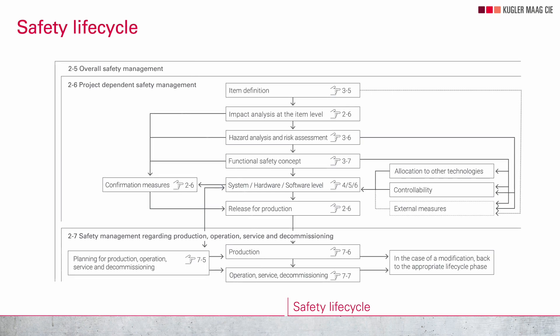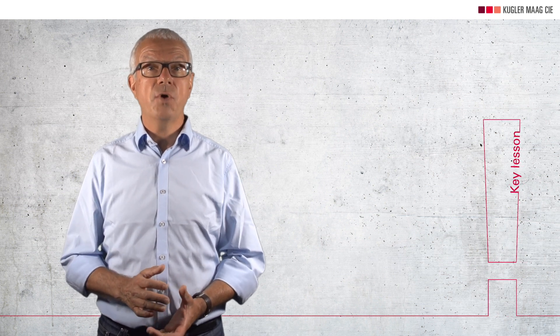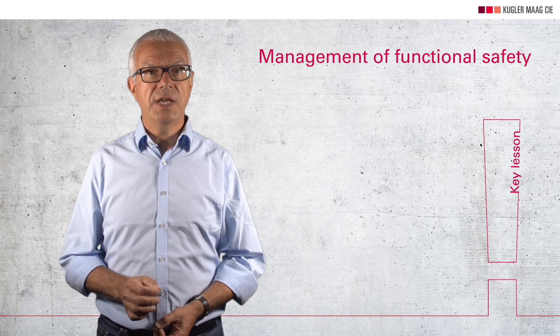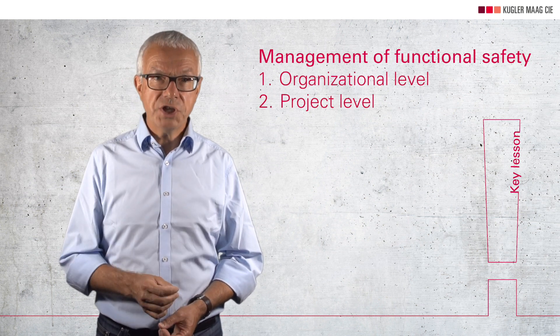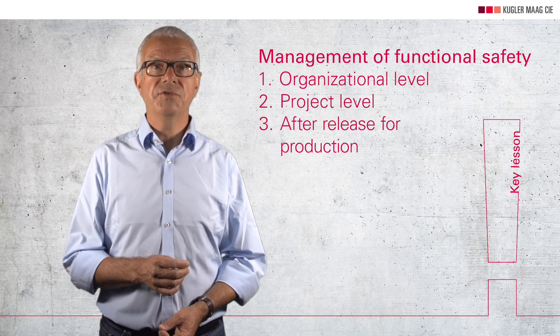Let's start with point number one. For functional safety in automotive, a so-called safety lifecycle has been defined, which you see here. Related to that, lifecycle management is addressed in three areas: overall safety management, project-specific safety management, and post-release management. Management of functional safety needs to be addressed on an organizational level, on a per-project level, and for the time after release for production.